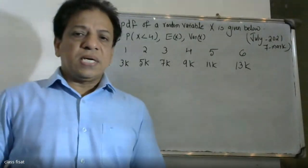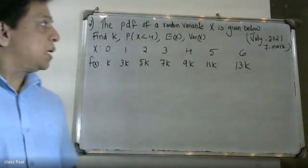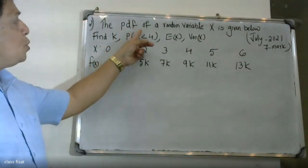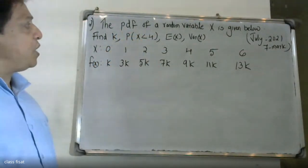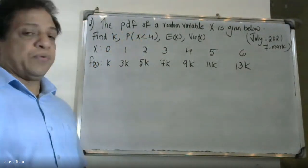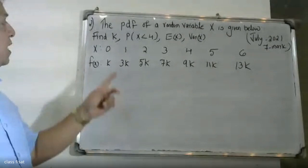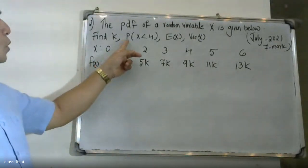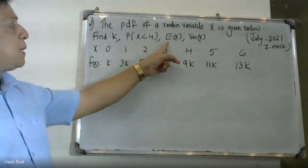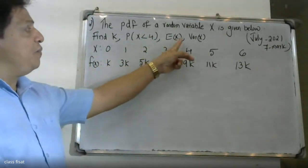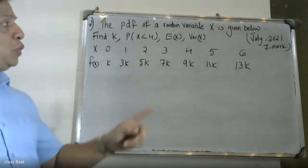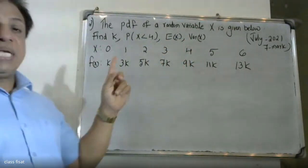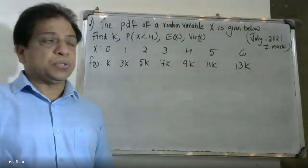Good morning students. The probability distribution function of random variable x is given below. Find: the value of k, probability of x less than 4, expectation of x, and variance of x.